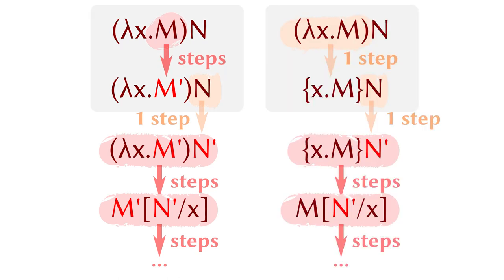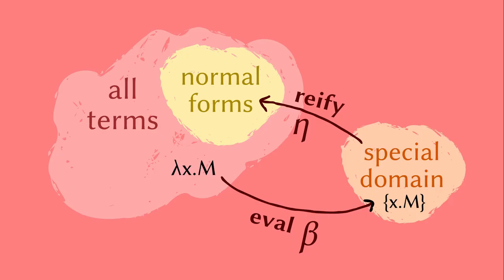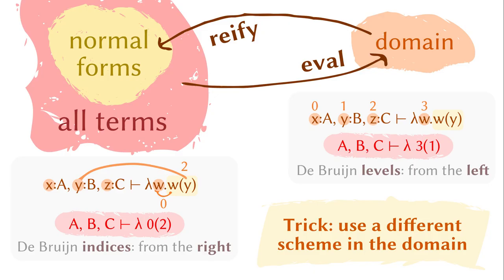One solution is to hold the evaluation under the binder until you know the actual argument. The addition of delayed evaluation suggests a separate domain different from the original calculus. The evaluation and ratification phases become intertwined because the expansion during ratification could trigger delayed evaluation.